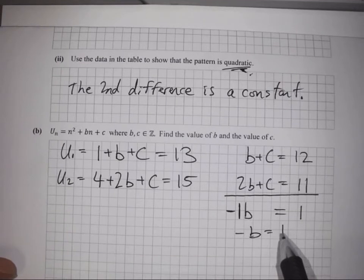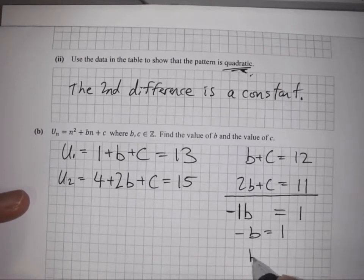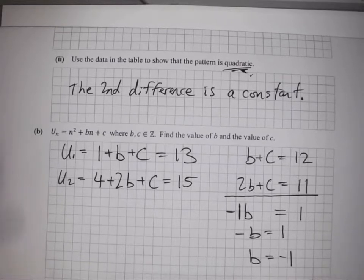We want to know what b is, so we multiply across by -1. This gives us b equals -1.